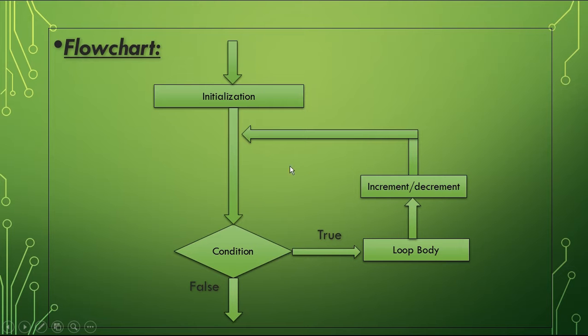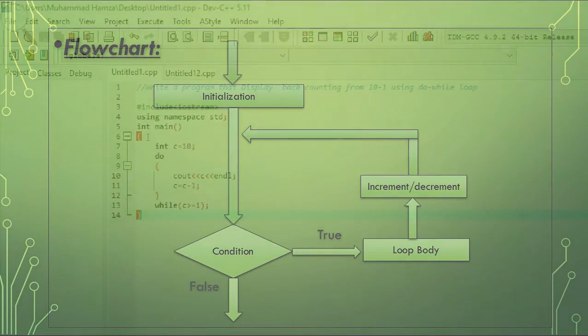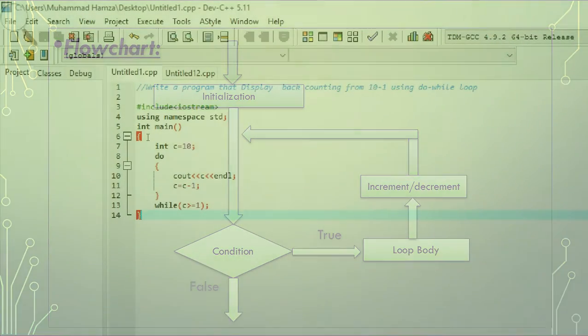The loop terminates when the condition becomes false. That was the flowchart of the for loop. Now let us move towards the compiler.